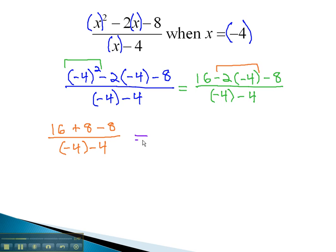Finally, order of operations allows us to do the addition and subtraction. In the numerator, 16 plus 8 minus 8 gives us 16. In the denominator, negative 4 minus 4 is negative 8.